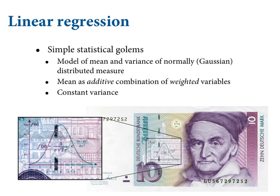So with that looming over us, let's think about just describing what a linear regression is. These are simple little statistical golems that model how the mean of some measure changes when you learn other things about cases. You model the mean and variance of some normally distributed measure. The mean is always modeled as some additive combination of weighted variables. Typically, we assume there's a constant variance, but you don't have to.